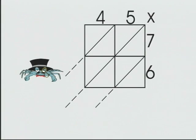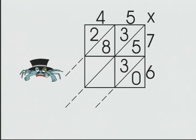Next, we multiply. 7 times 5, 35. 6 times 5, 30. 7 times 4, 28. 6 times 4, 24.